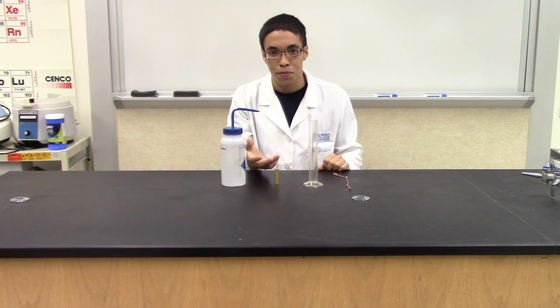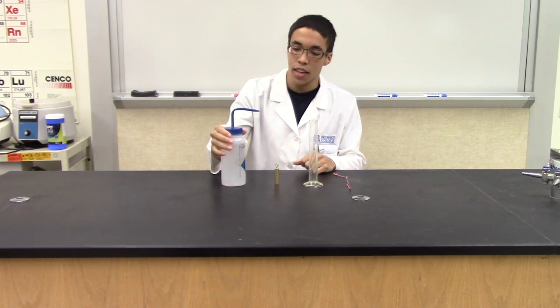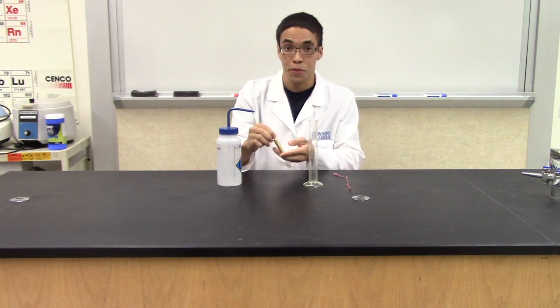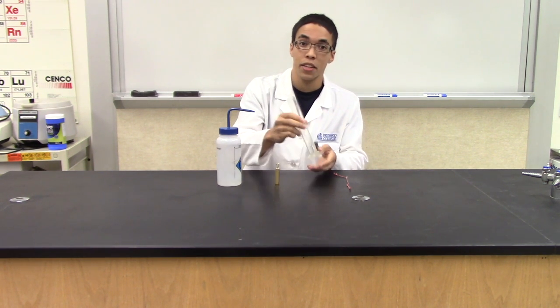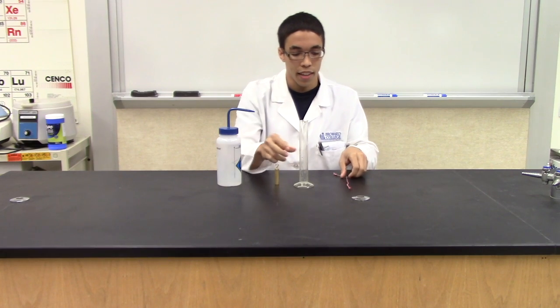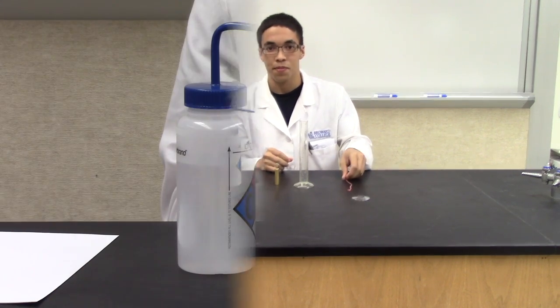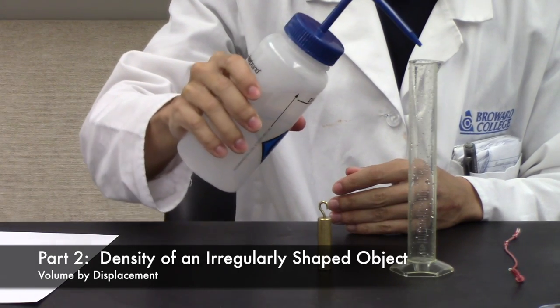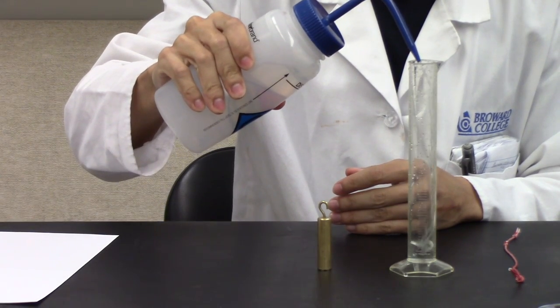Hi, my name is Diony Antigua. And today, I'll be showing you how to find volume by water displacement. Today, you'll be using a distilled water bottle, a regular object, a plastic graduated cylinder, and a string. First, you will fill a plastic graduated cylinder to about halfway using distilled water.